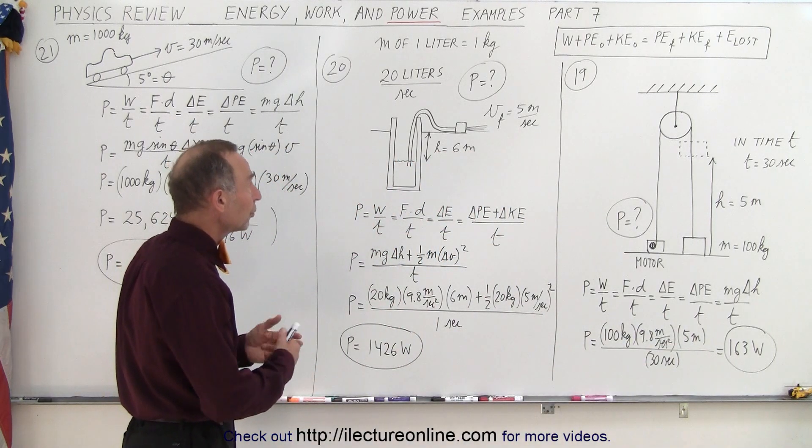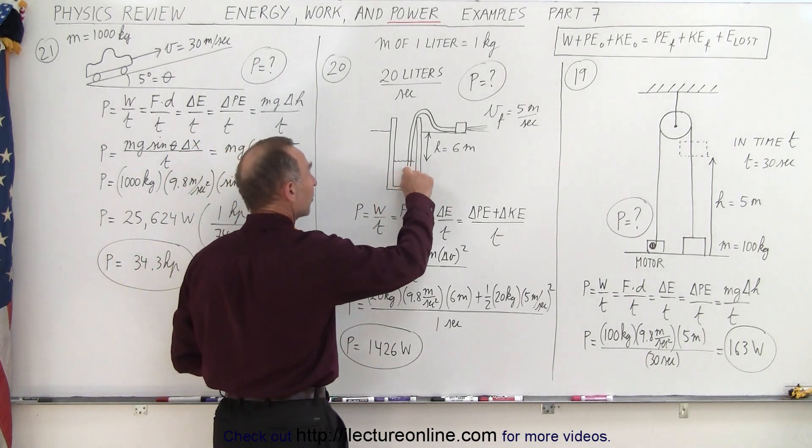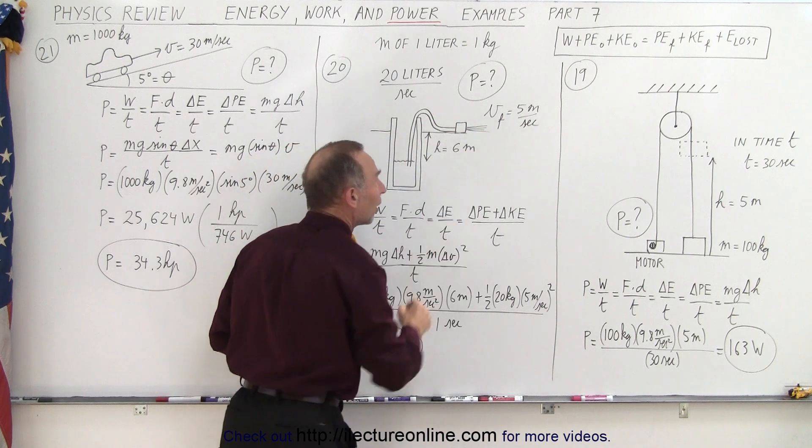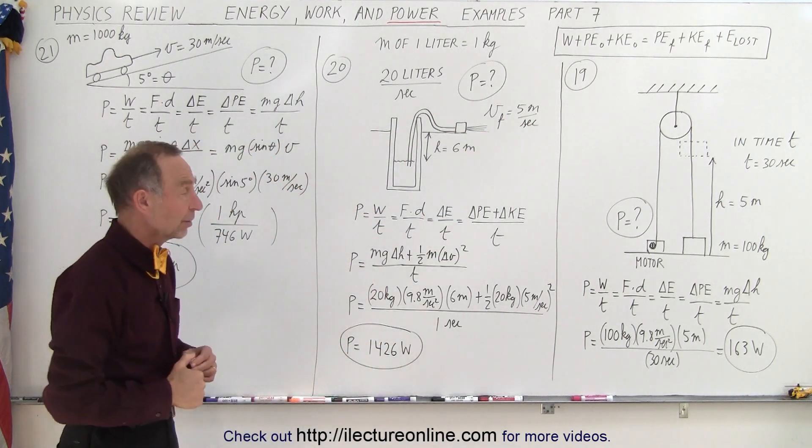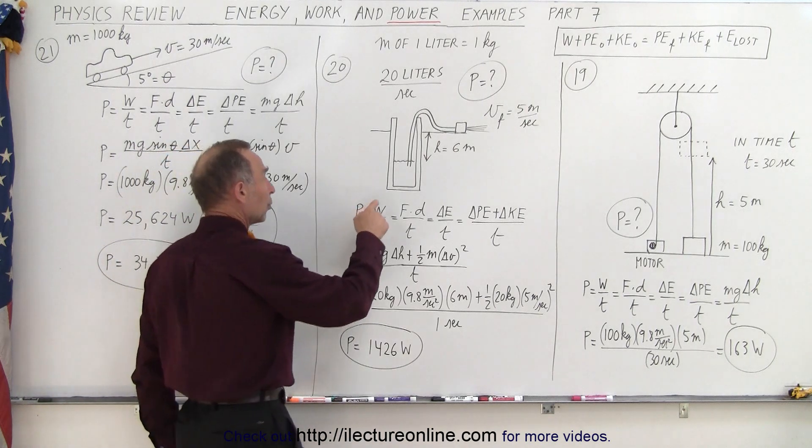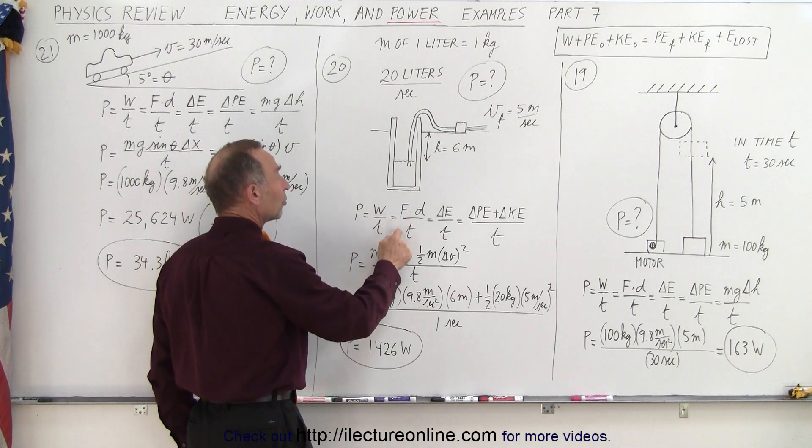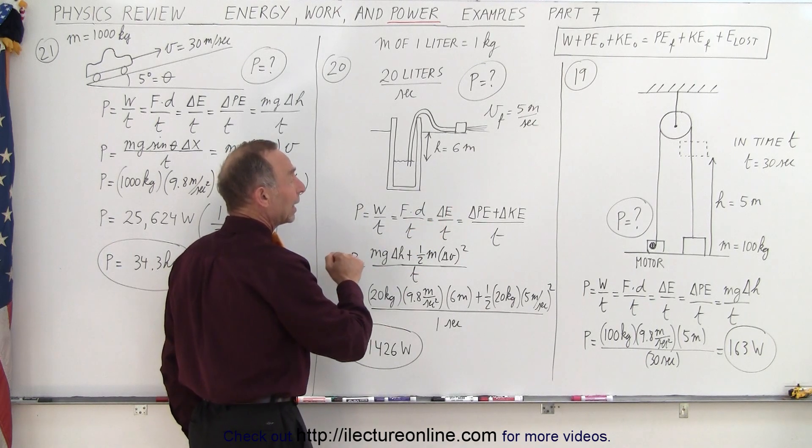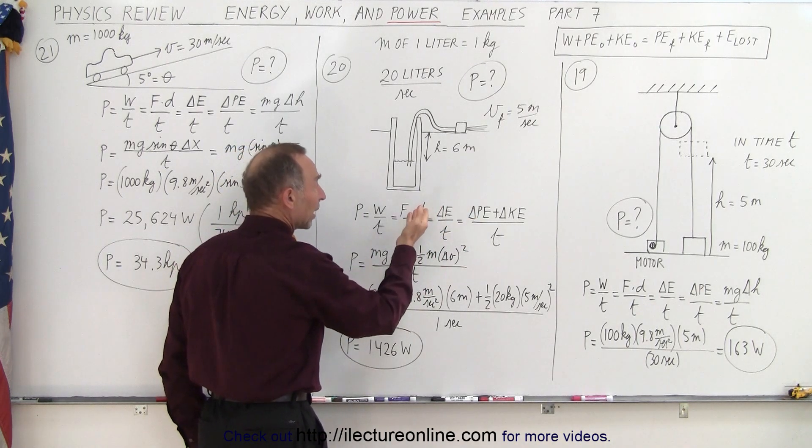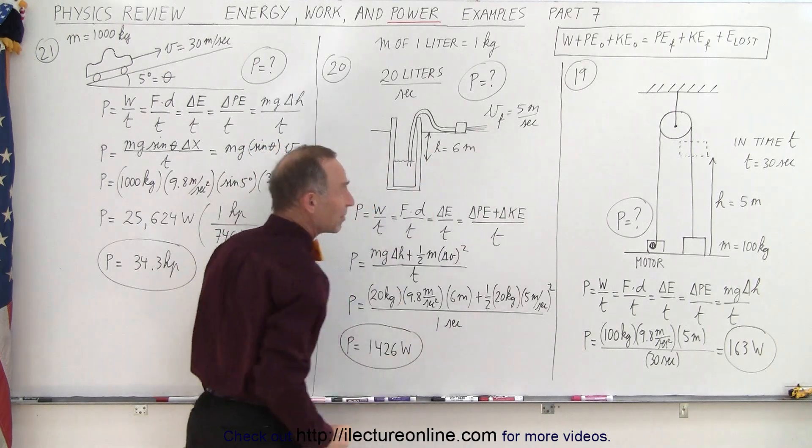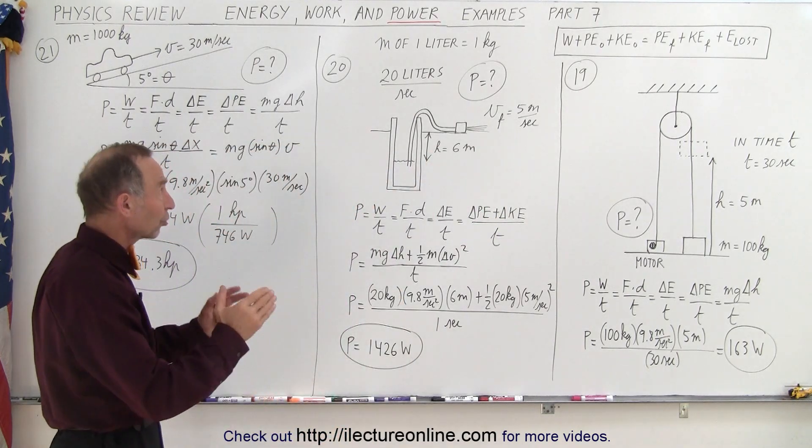In this case we're doing two things: we're lifting up water from a well through a height of 6 meters and then giving it a velocity of 5 meters per second. So again, how much power does that require? Well it's work over time, or force times distance over time. In this case we can say it's a change in energy over time, and we're going to add potential energy by lifting the water up and kinetic energy by spewing it out at 5 meters per second all in a certain amount of time.